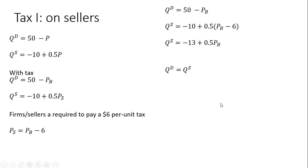And just setting quantity demanded equal to quantity supplied once again. One equation, one unknown. We're going to solve for the price that buyers pay in the face of a tax. So adding 13 to both sides, we get 63. Adding the price that buyers pay to both sides, we get this.